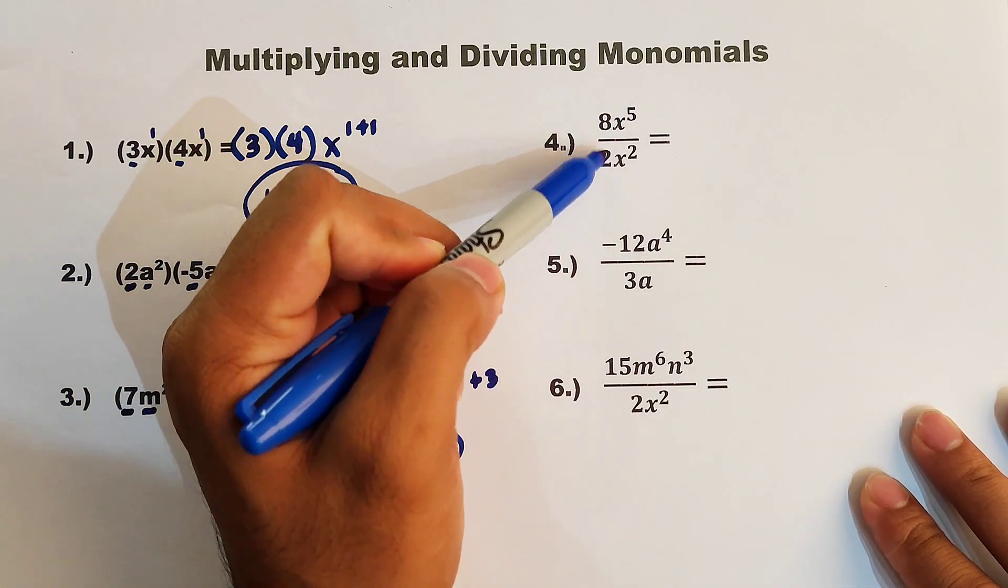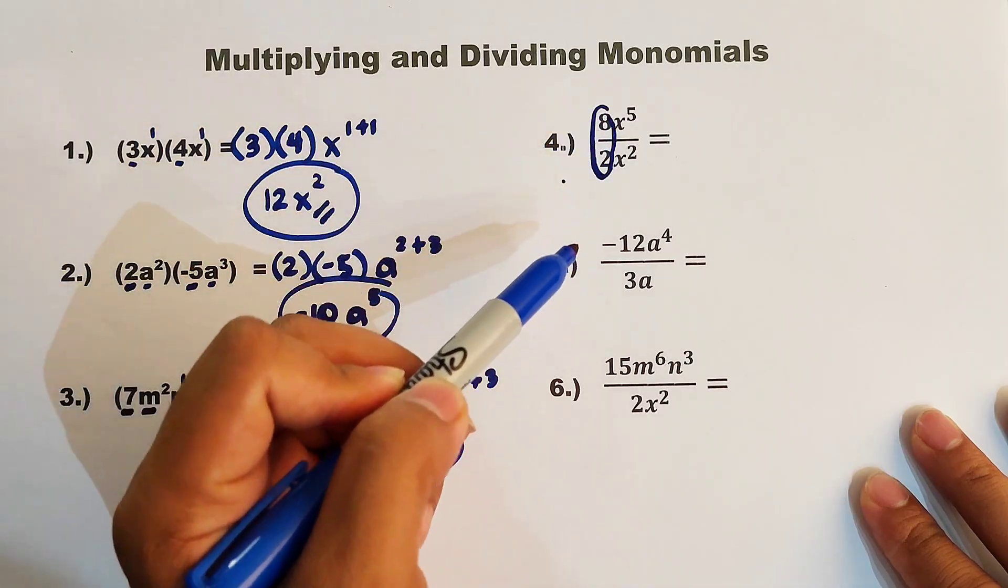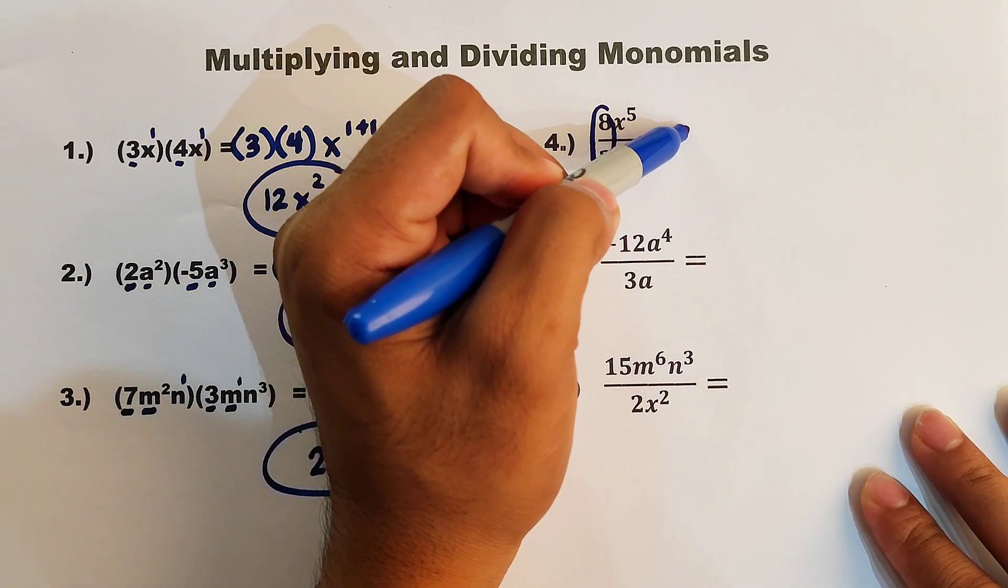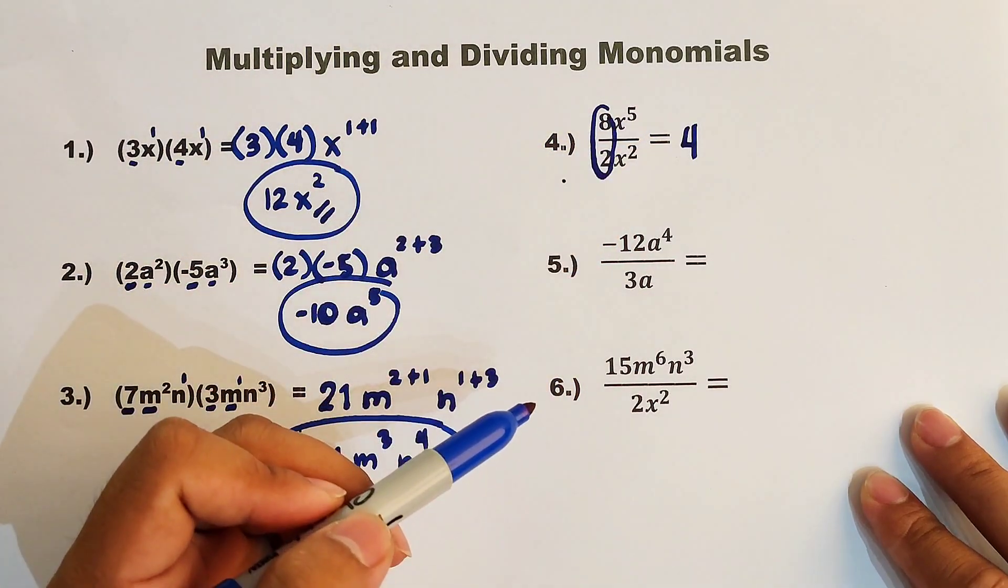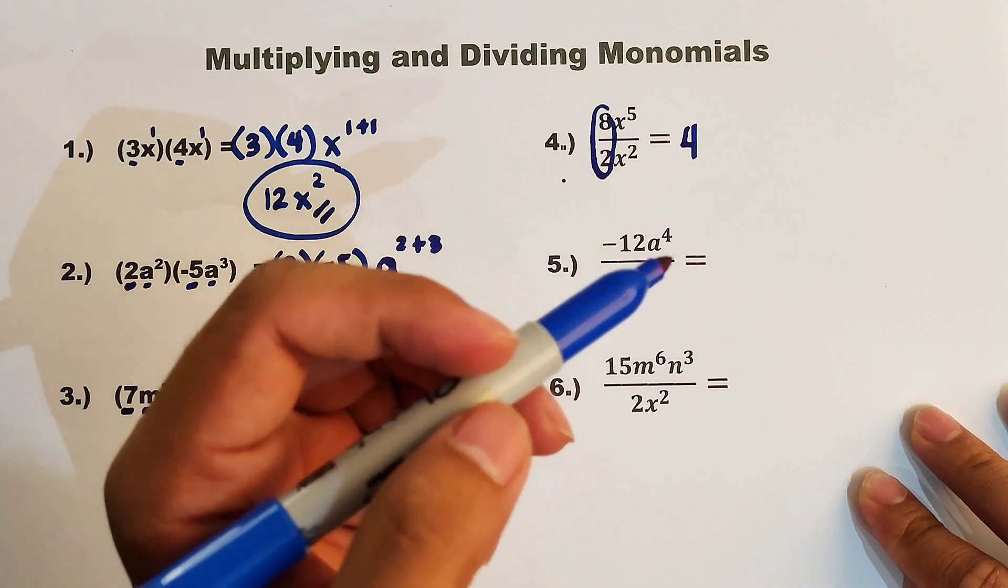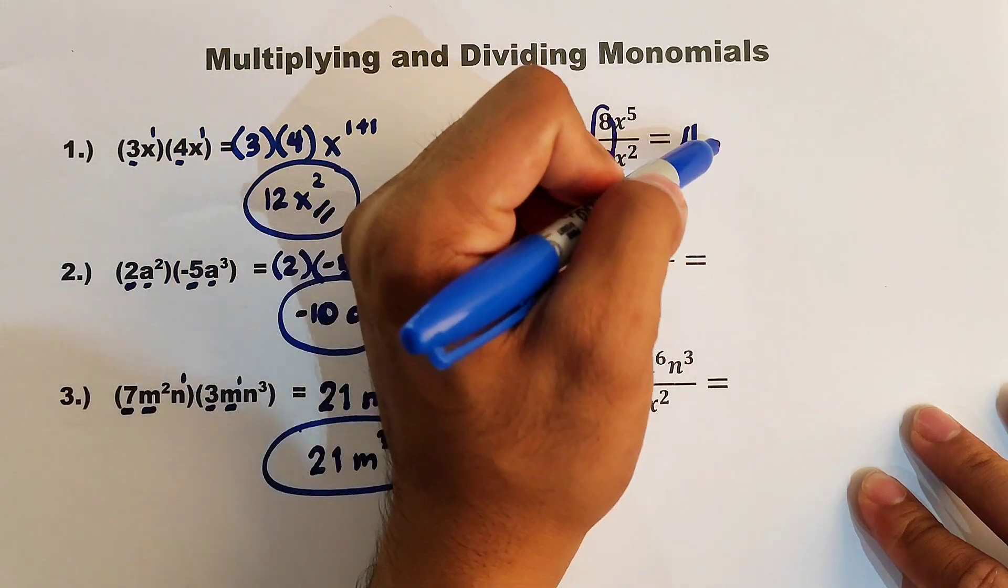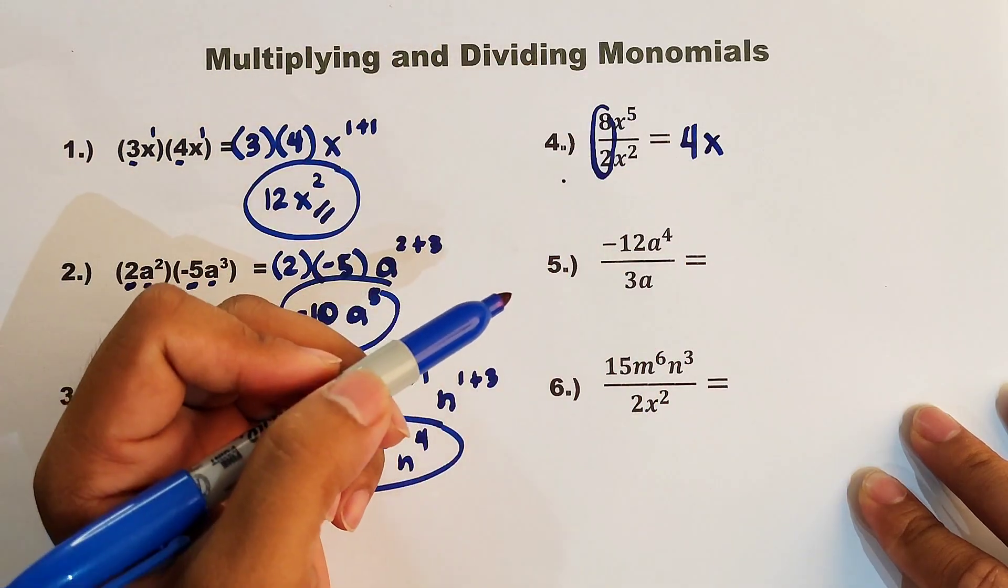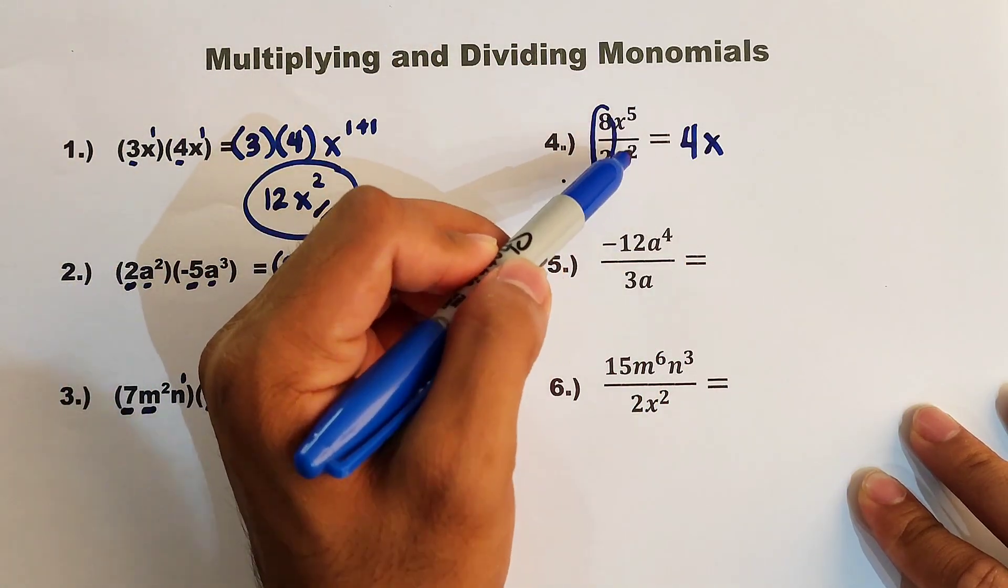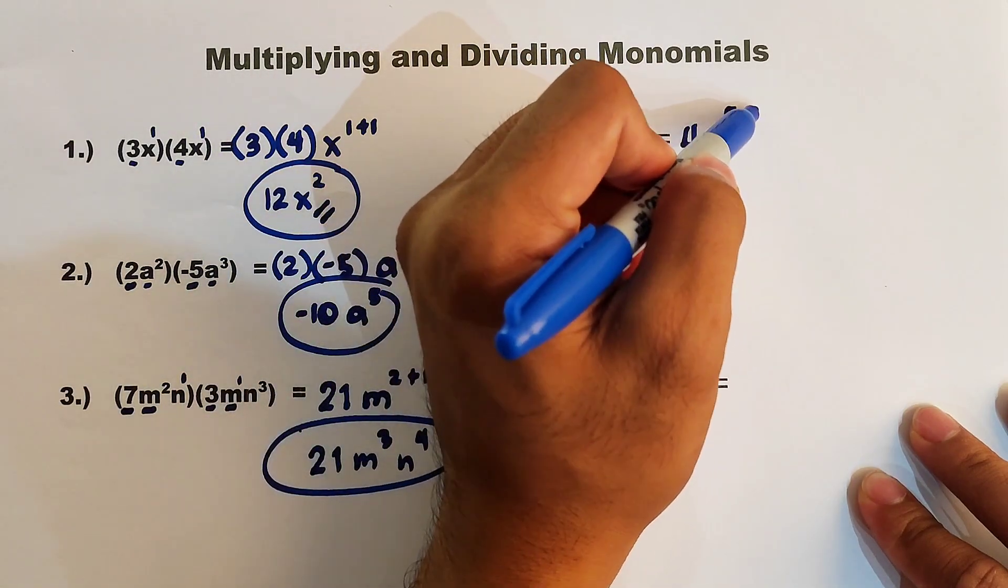Now, simplify first the numbers, we have 8 over 2, or simply 8 divided by 2, that would give you the answer of 4. So what about the variable? We will apply the quotient rule. Since we have the same variable, we will copy x, and then we will subtract the exponents. In this case, we have 5 minus 2.